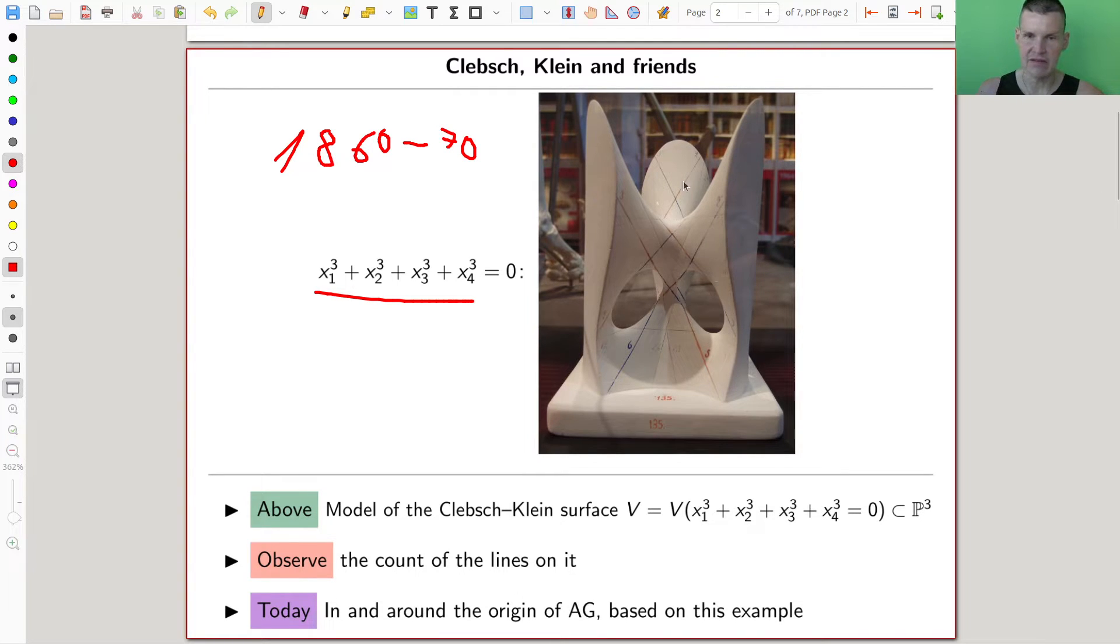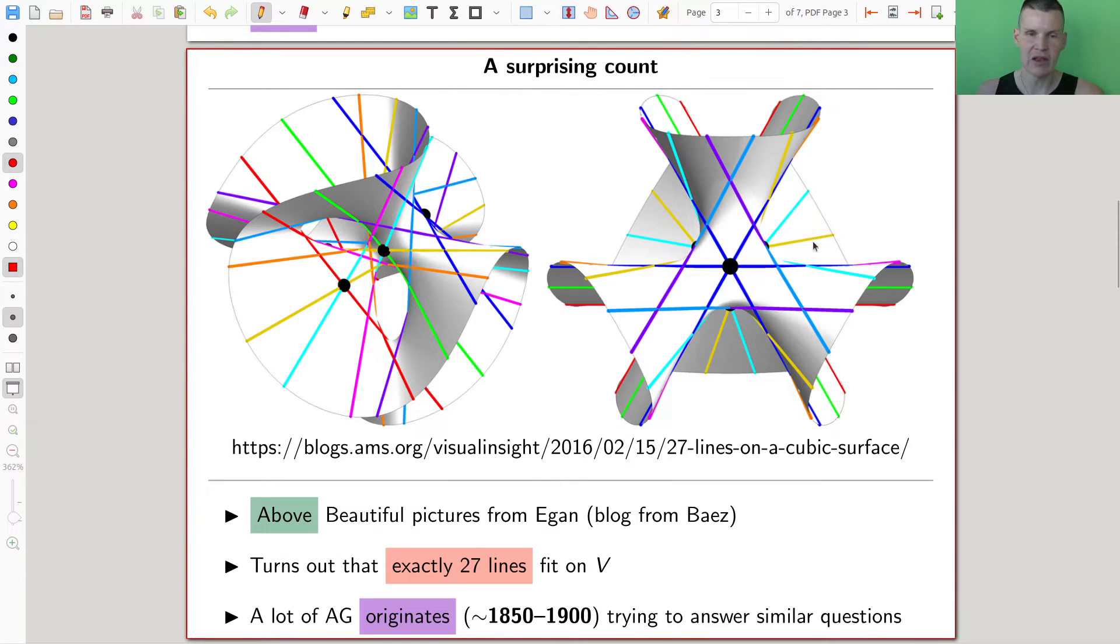So what you see here is a surface, and you see lines on that surface, which is a bit surprising. You see that in an animation a little bit better in a second.